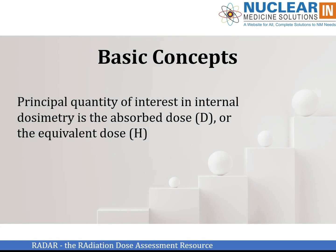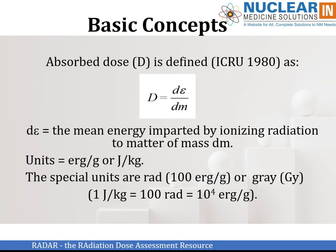But first, we've got to calculate a dose and then relate that to observed effects. The absorbed dose, as defined by the ICRU — the International Commission on Radiological Units — is dE/dM, where dE is the mean energy imparted by ionizing radiation to matter of mass dM. The units are ergs per gram or joules per kilogram. The newer SI units are joules per kilogram; the older traditional units are ergs per gram. The special units of absorbed dose are the RAD, which is 100 ergs per gram, or the Gray, which is 1 joule per kilogram — and if you work out the conversions, 1 Gray is equivalent to 100 RAD.